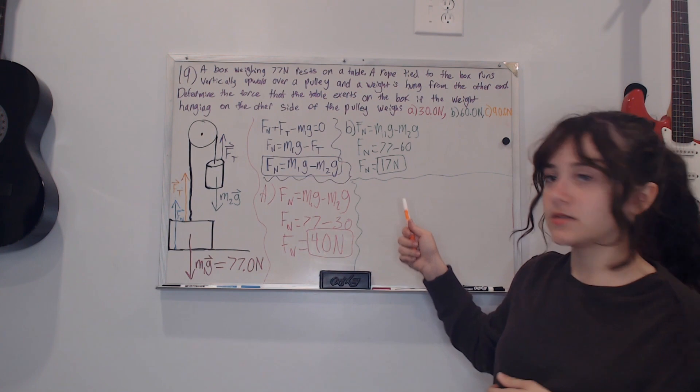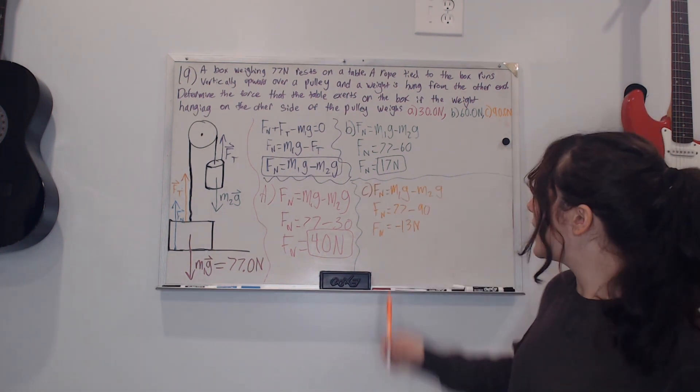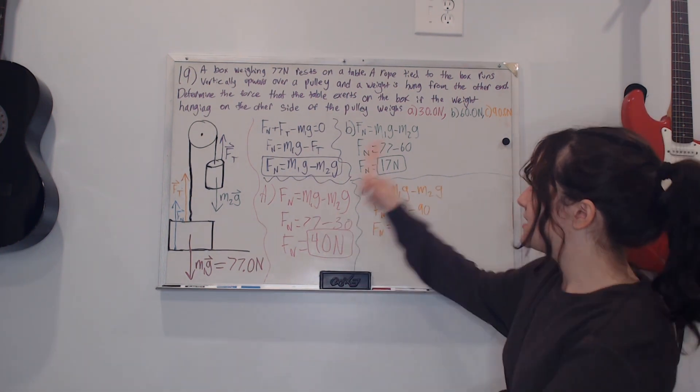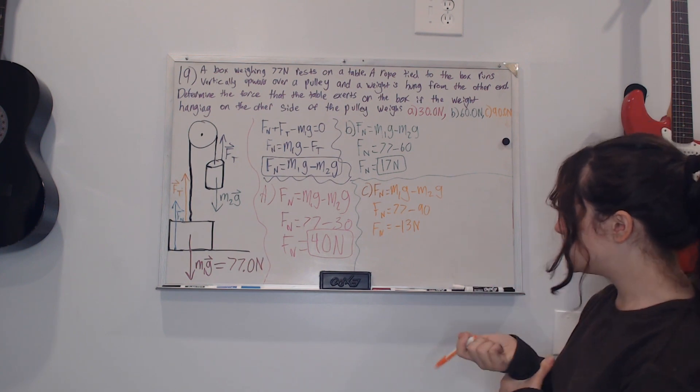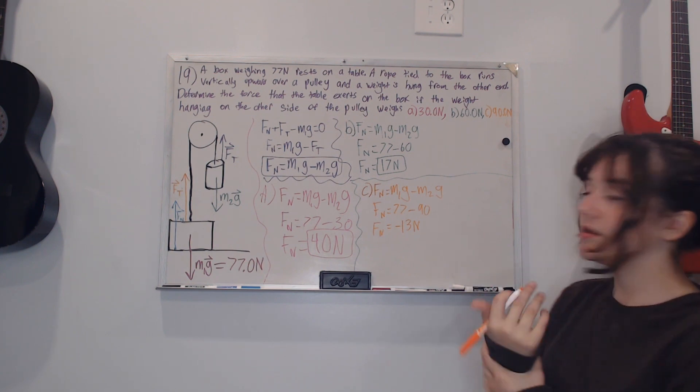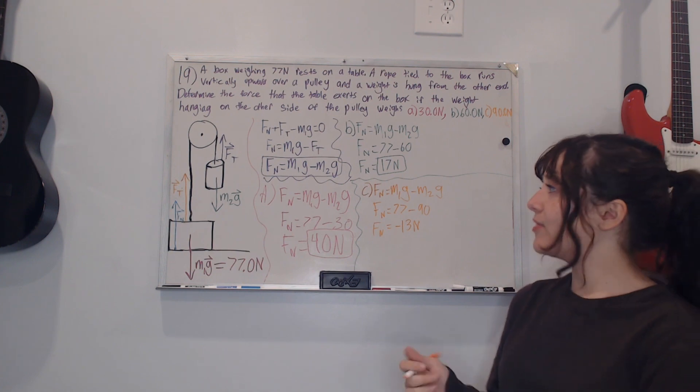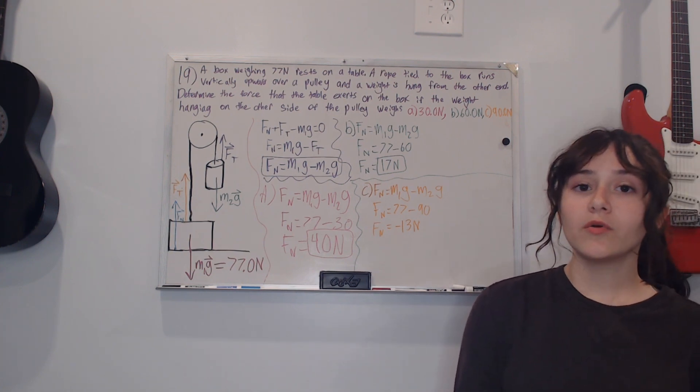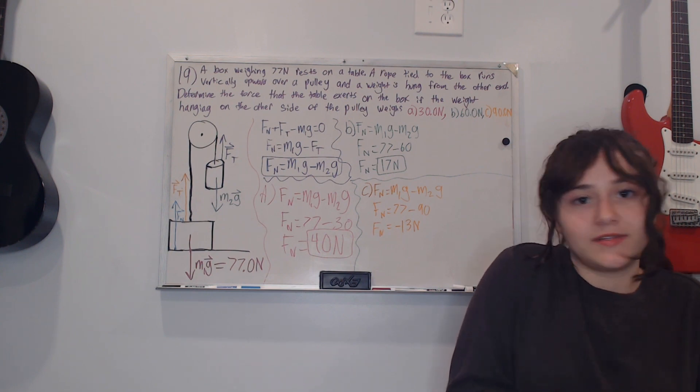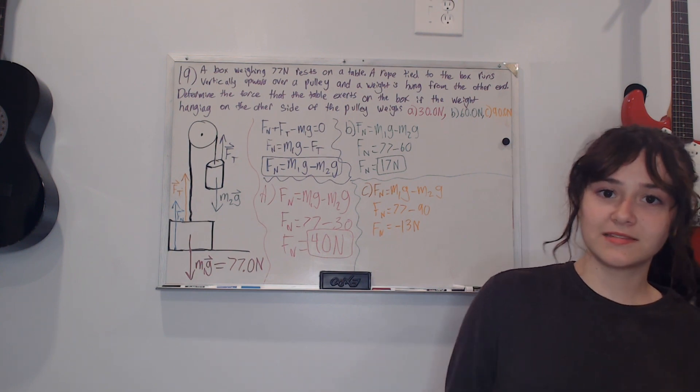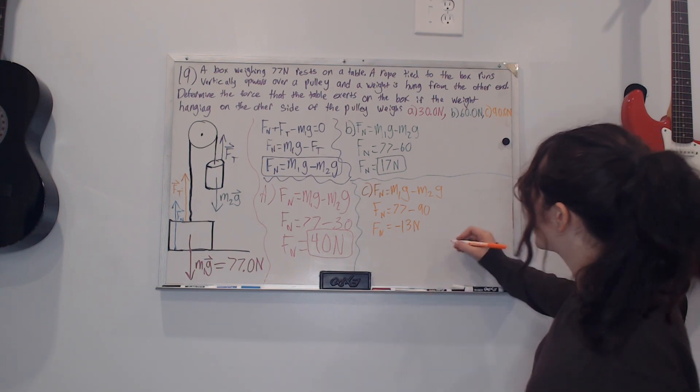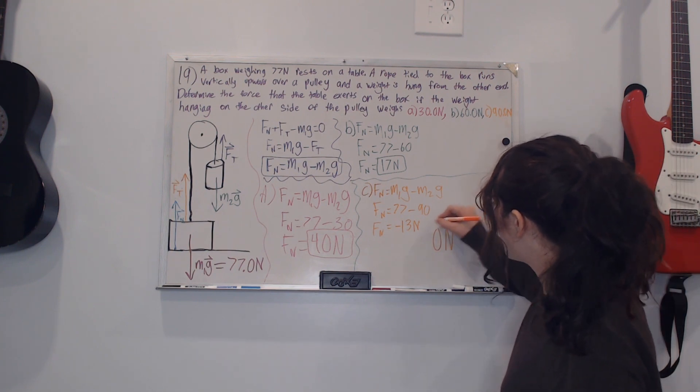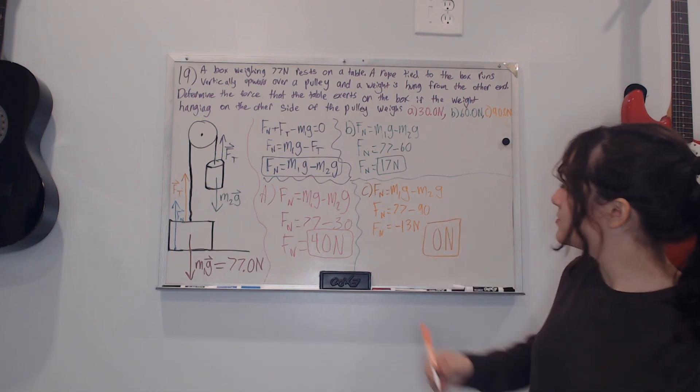Now all I have to do is solve for c. For part c I repeated the exact same steps that I did in a and b except I replaced it with 90, but I got negative 13 newtons. The box can't exert negative 13 newtons on the table so you're just supposed to write zero newtons because that's how much it exerts, because it's not exerting any force on the table. So those would be our answers for each of the parts.